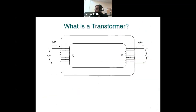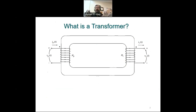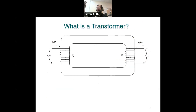In an ideal transformer, we have three main components: the primary winding, the secondary winding, and the core that links the two. Transformers are used to either step up the voltage or step down the voltage. We need to step up the voltage when we transmit the power to reduce the current and hence reduce the losses.